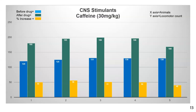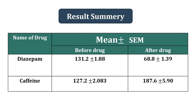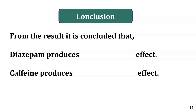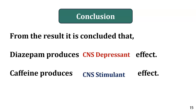After the drug, the activity is increased due to the CNS stimulant drug caffeine. The summary of results: diazepam, a CNS depressant drug, showed a before-drug locomotor count of 131.2 ± 1.88 and after drug it reduced to 68.88 ± 1.39. For caffeine, the before-drug count was 127 and after drug the count increased. This is experiment number 16 and 17 as per PCI syllabus. Conclusion: diazepam produces CNS depressant effect whereas caffeine produces CNS stimulant effect.